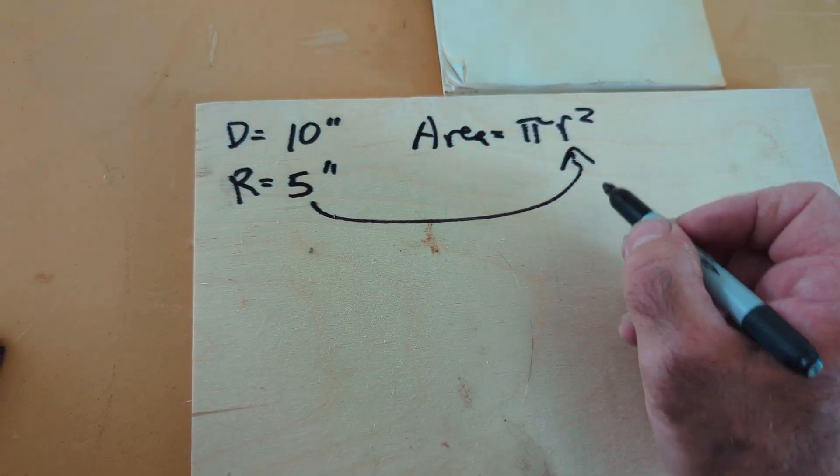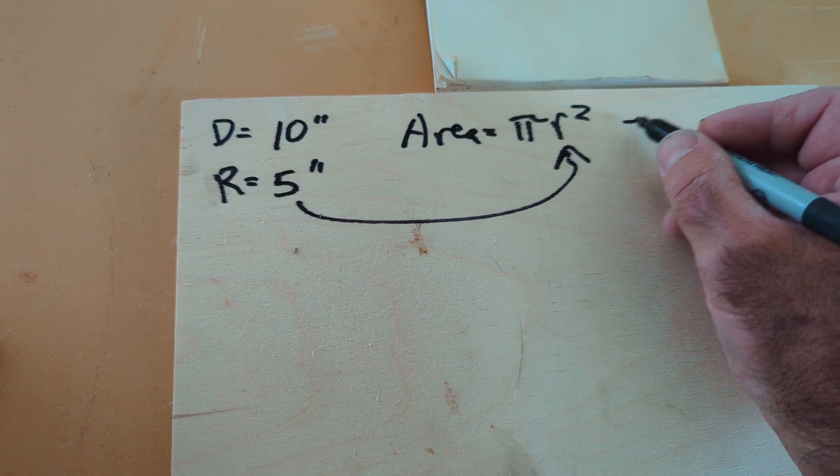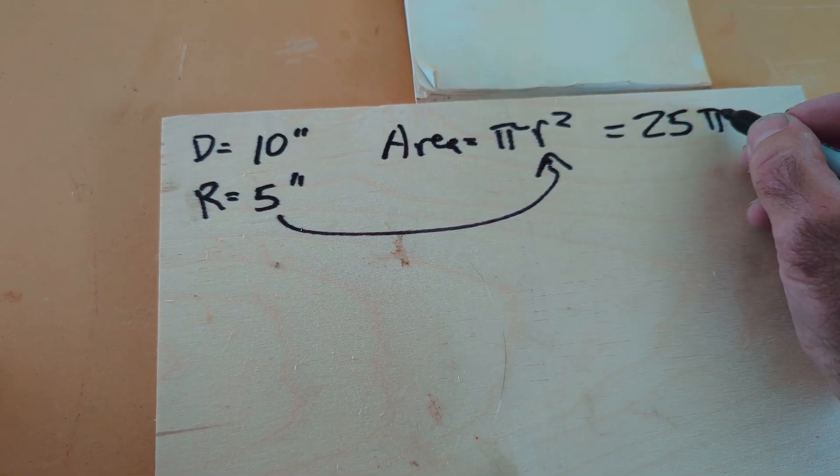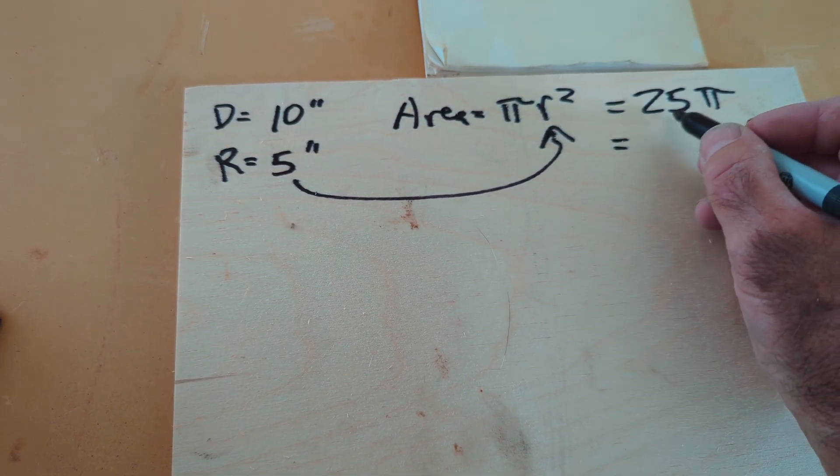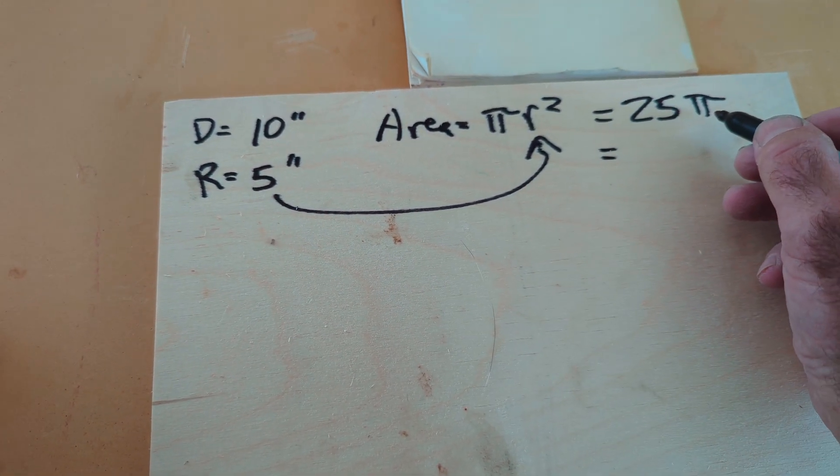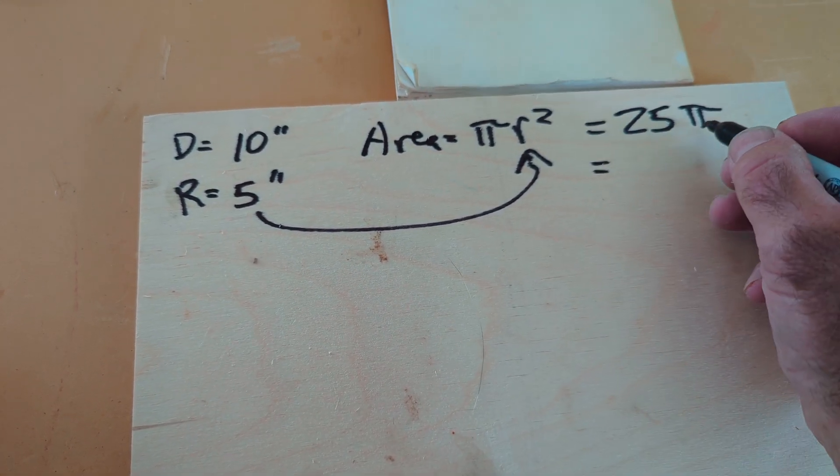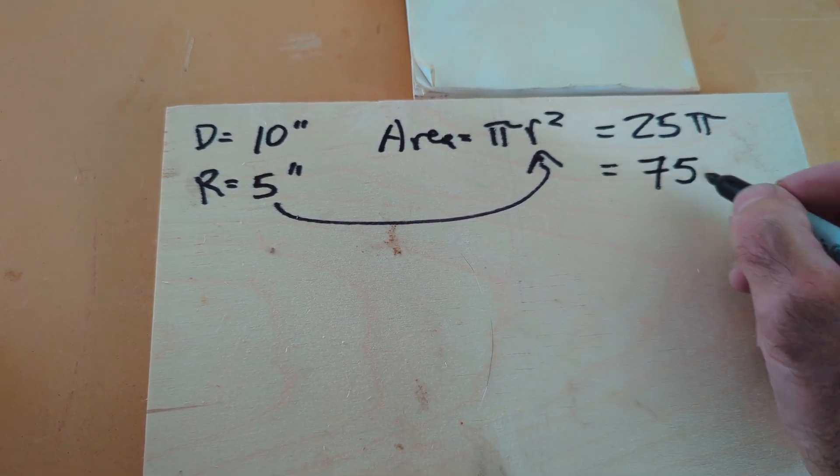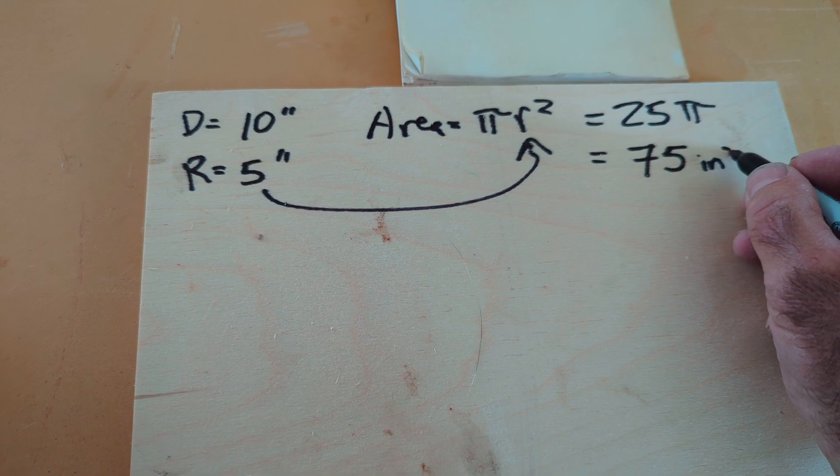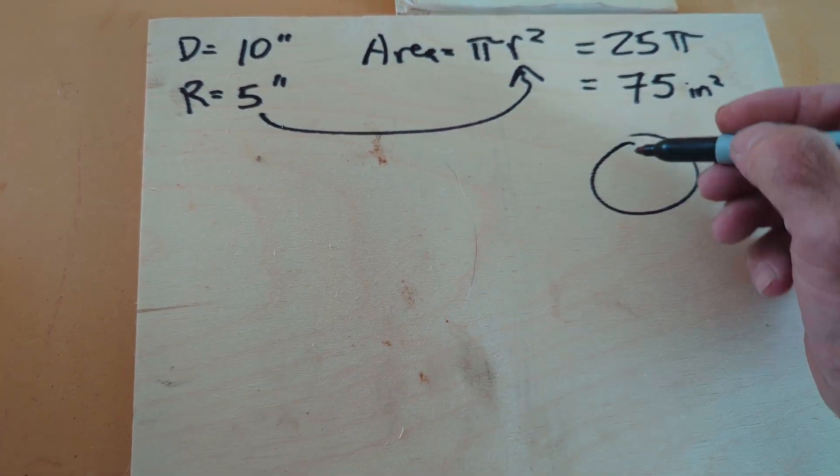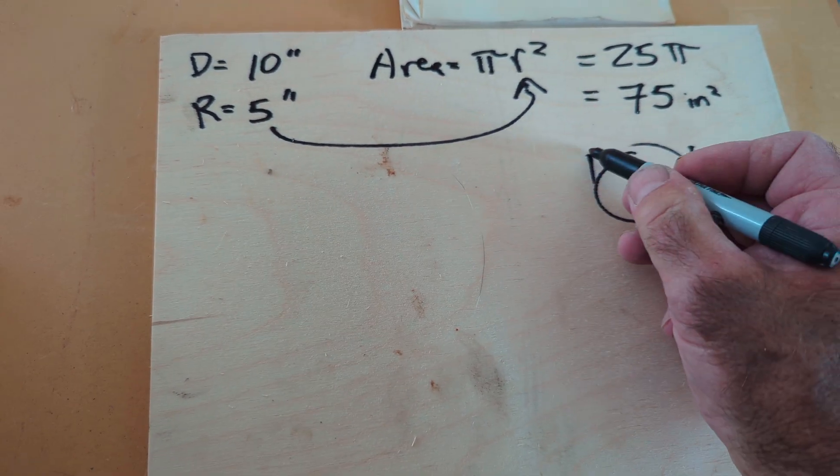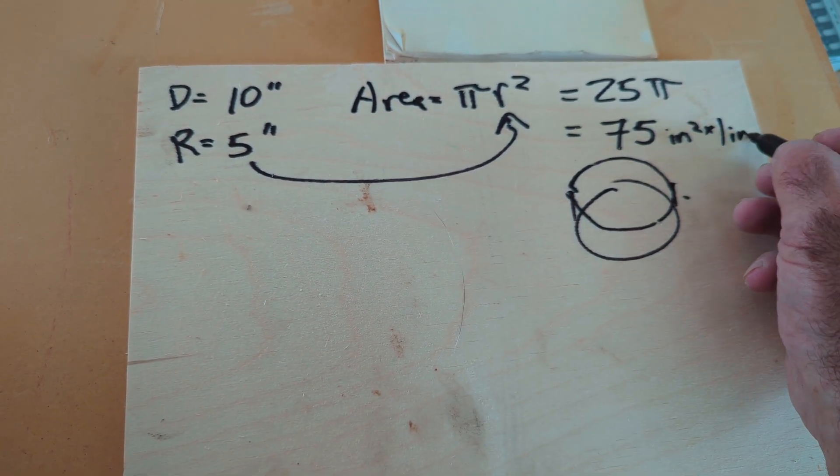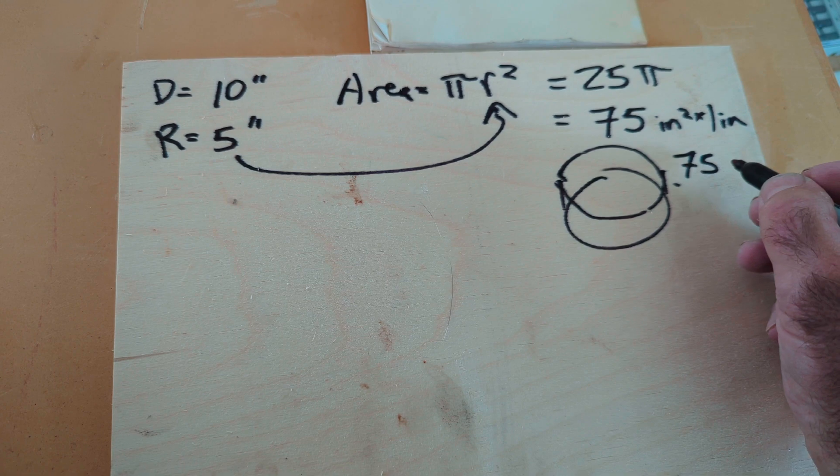Take that 5, plug it in there. 5 squared is 25. 5 times 5, 25 times pi. So we're going to approximate that at about 3. It's 3.14, but we'll use 3. 3 times 25 is 75 square inches. That's the area of that circle. If it's 1 inch tall, then we're going to multiply it by 1 inch. It gets 75 cubic inches.